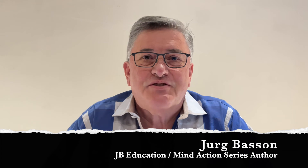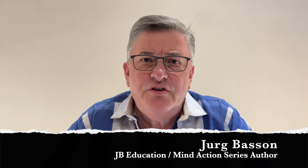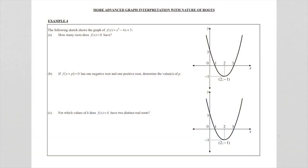Good day. Welcome back to lesson number five on graph interpretation with nature of roots. In the previous lesson we looked at the three cases, so let's now look at our first problem. The following sketch shows the graph of f(x) = x² - 4x + 3. You will notice the parabola — the x-intercepts are given, the y-intercept is given, as well as the turning point.